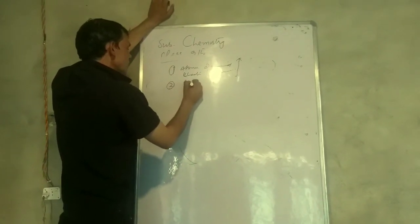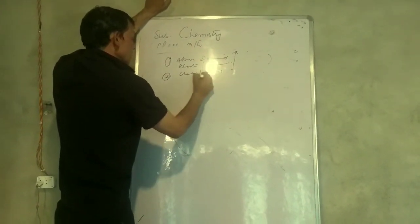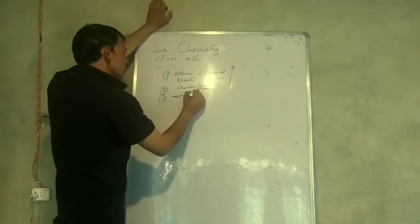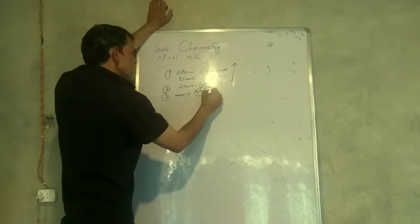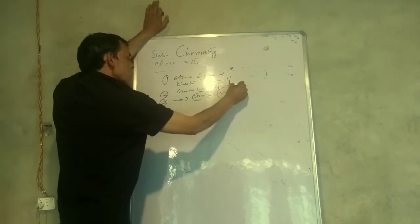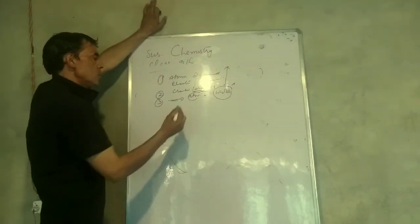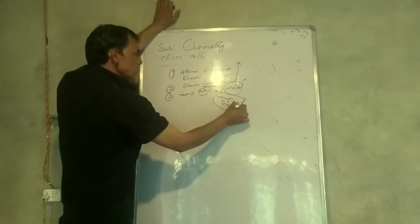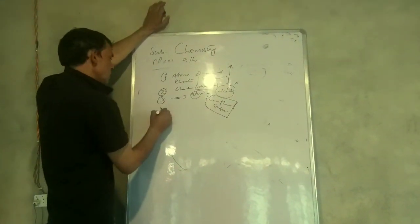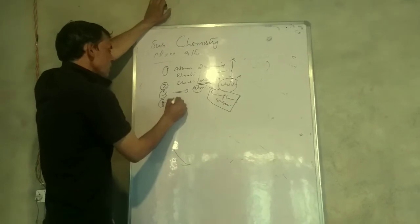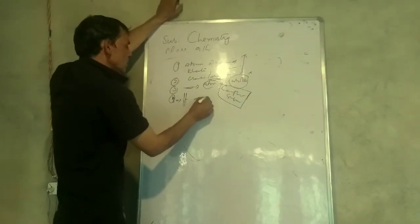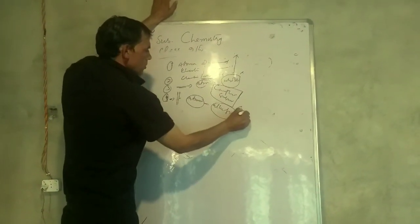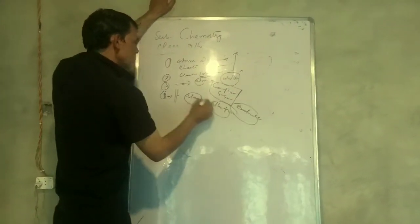The second thing is that atoms can be created and destroyed. The third thing is that atoms combine in fixed whole number ratios. The existence of allotropes was not explained by Dalton's theory.